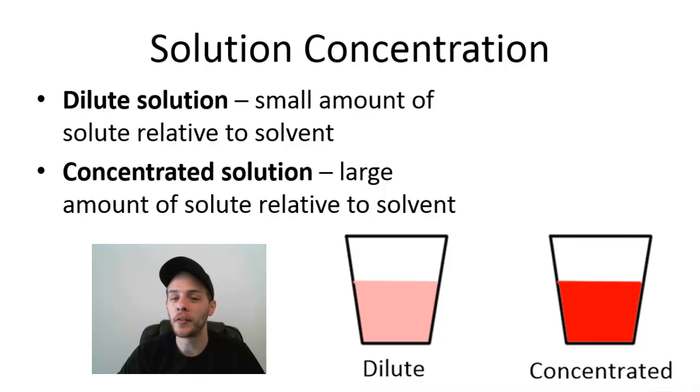On the flip side, if I have a concentrated solution, that would be like taking five tablespoons of Kool-Aid powder and dissolving it in just one cup of water. That would make a very potent, very syrupy, very concentrated solution of Kool-Aid.